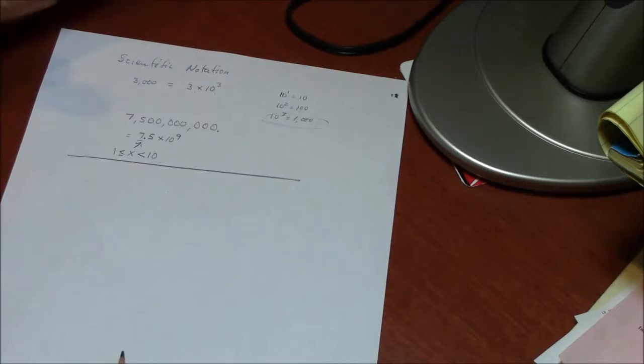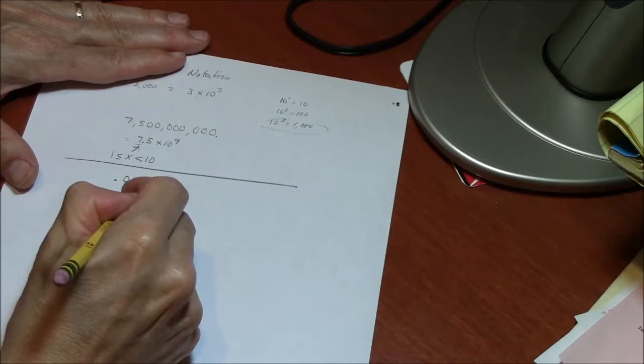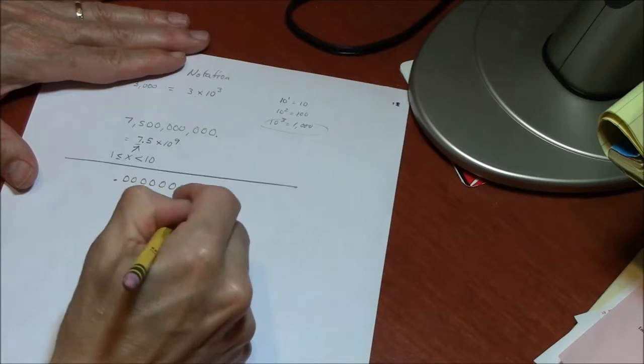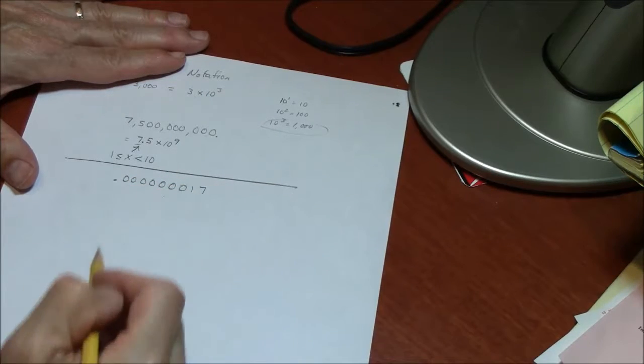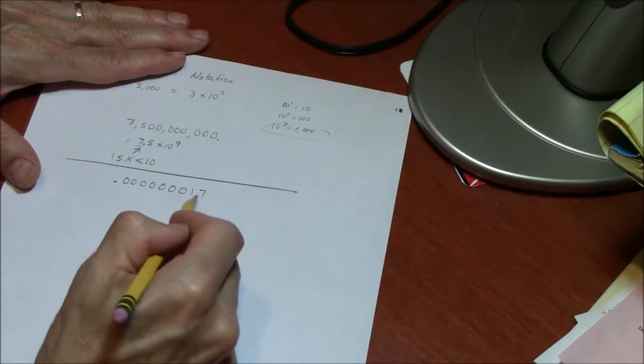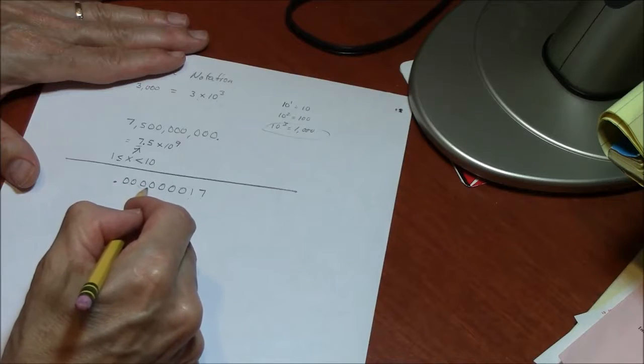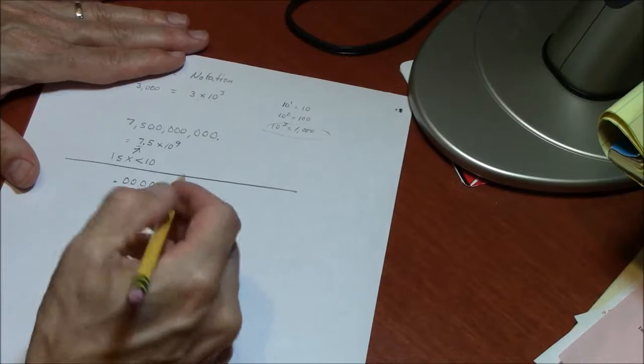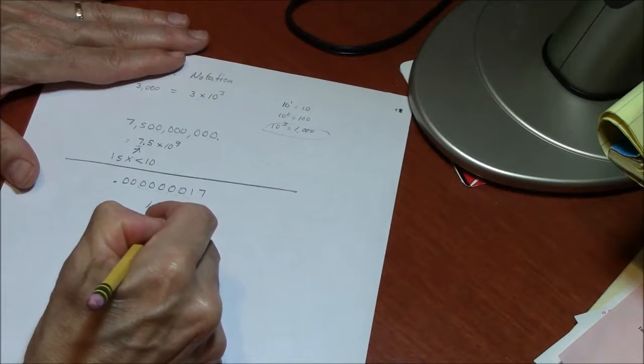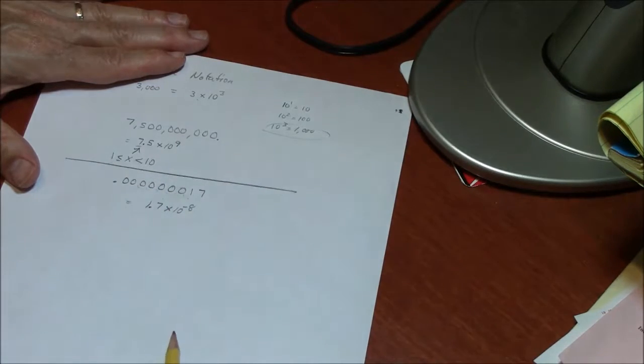Scientific notation is also useful when you have very small numbers, like 0.000000017. Once again, I can count how many times I move the decimal to get it between the 1 and the 7. 1, 2, 3, 4, 5, 6, 7, 8. This is 1.7 times 10 to the minus 8, this small number here.